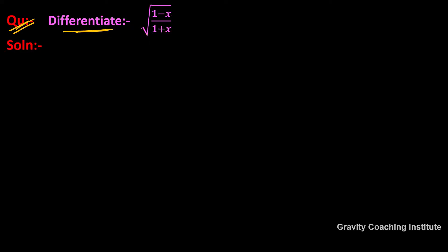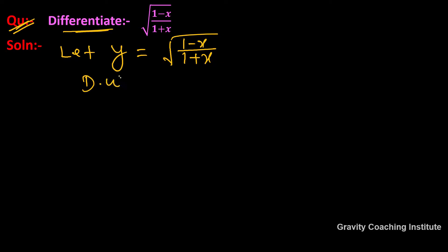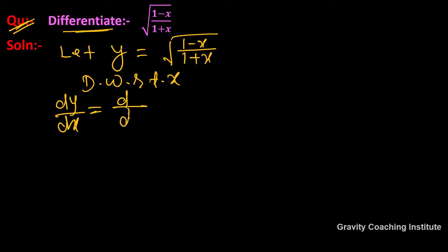Question: differentiate √((1-x)/(1+x)). So first of all, let y equal to √((1-x)/(1+x)). Now differentiate with respect to x — the differentiation with respect to x gives dy/dx equal to differentiation of √((1-x)/(1+x)).